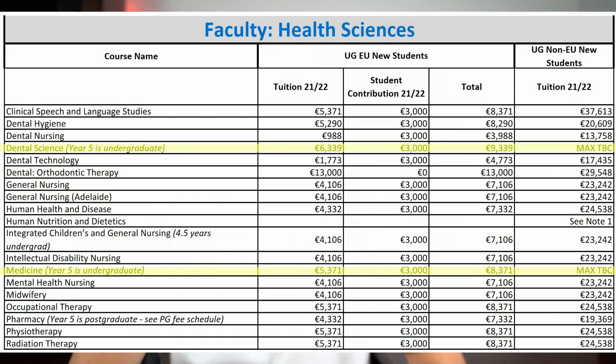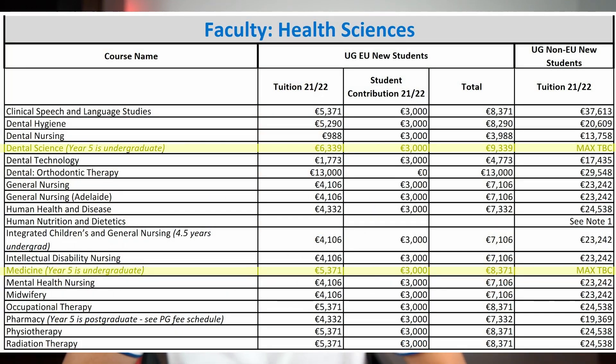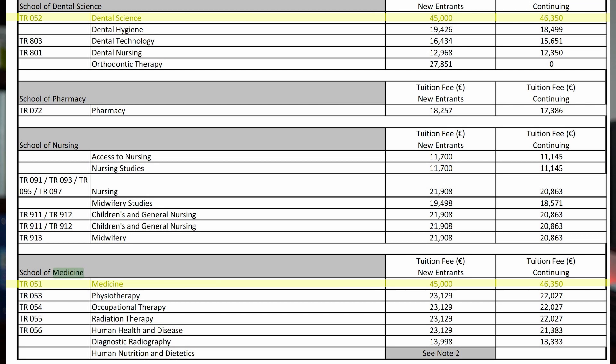Moving on to the international fees — the next column — for non-EU students, the fees for dental school and medical school are listed as max TBC. I found another table from 2019–2020 showing the cost is €45,000 for new entrants and then €46,000 per year for the following years. That translates to $68,000 Canadian dollars and $55,000 US dollars.